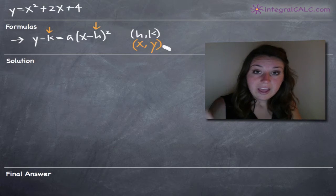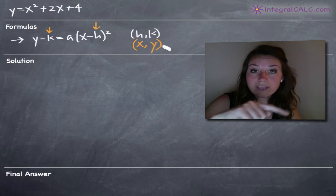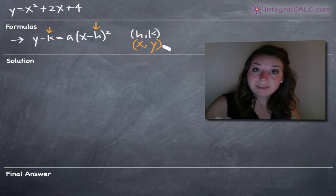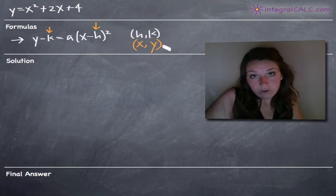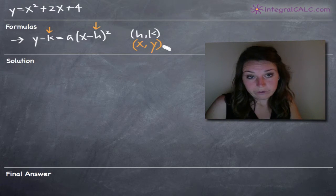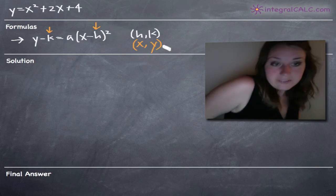If we know the vertex and then one other point, we can sketch one half of the parabola and then make the other half symmetrical about the vertical line that intersects the vertex.